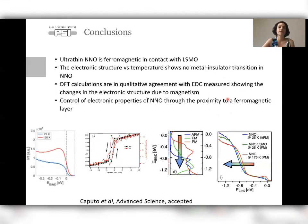So concluding our work, we see that the ultra-thin NNO is ferromagnetic in contact with LSMO. The electronic structure shows no metal-insulator transition in NNO, and the DFT calculations are in qualitative agreements with the energy distribution curves measured by ARPES. And they show the link between the magnetic ordering and the electronic structure. So our work, in summary, shows the control of the electronic properties of NNO by using a proximity layer. So using LSMO, we induce a ferromagnetic moment in NNO, and at the same time, NNO does not go through the metal-insulator transition when it's ferromagnetic.